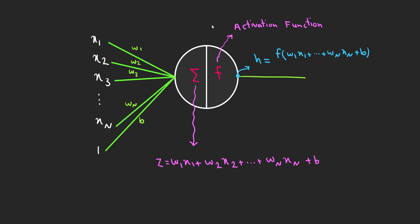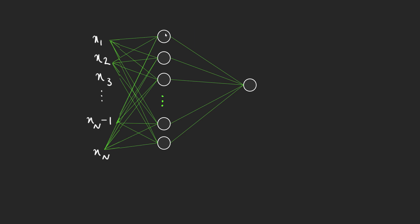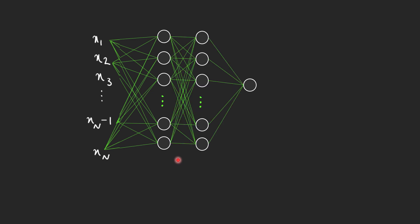The general idea is: why not use more processing units? Instead of one neuron, we can use, say, 100 neurons in a single layer to better capture the relationship between inputs and output. And instead of one layer of neurons, we can have two, three, or more layers — each containing any number of neurons such as 100, 200, 50, or 30.